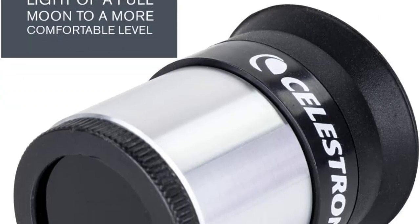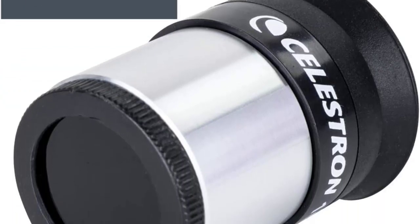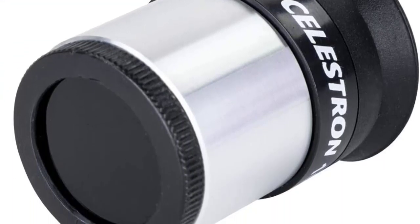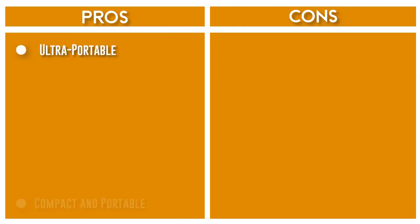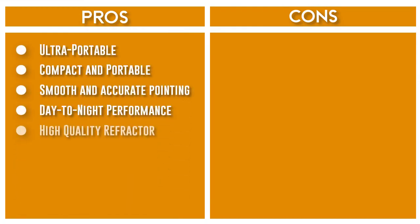The Travelscope features a refractor-style body ideal for both terrestrial and astronomical observing. Fully coated glass optics provide vivid images of wildlife, the moon, planets, and more.